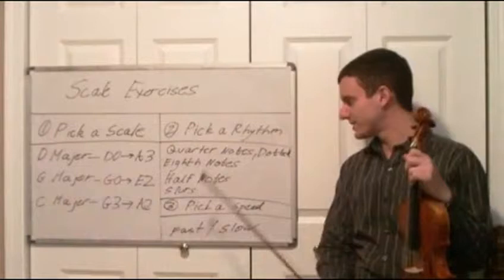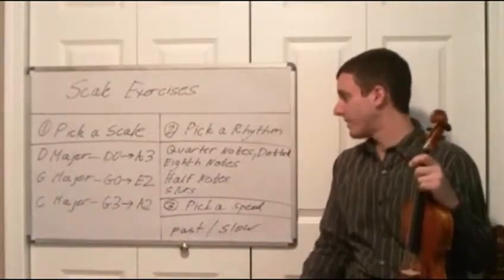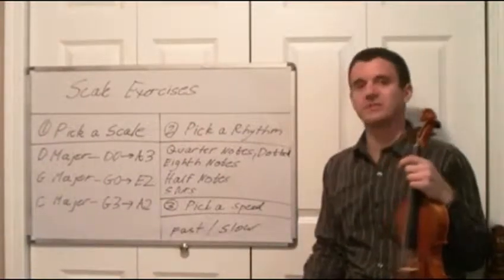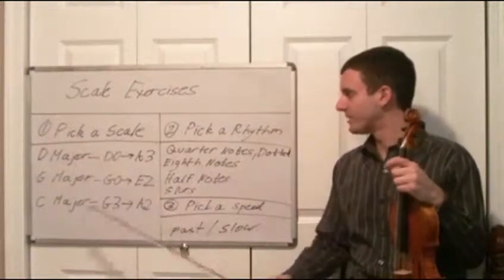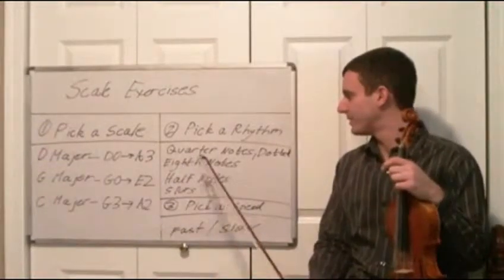Of course. So with this whole system, there's probably about 20 to 30 different combinations of scales that you can do with the three different scales that you know, the rhythms, and the speed.